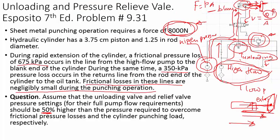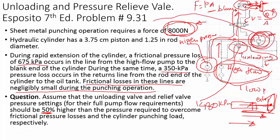To summarize: the unloading valve should be set at 1480 kilopascals, and the pressure relief valve should be set at 1086.5 kilopascals.